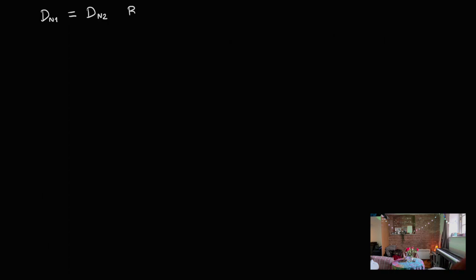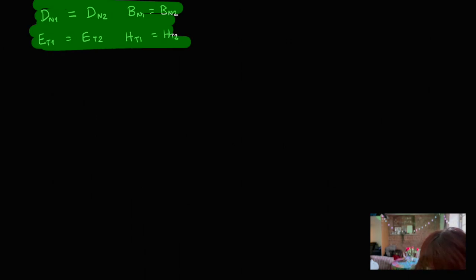In the last video, we derived the four results that different components of both the electric and displacement field, as well as the magnetic and magnetic intensity fields, transport across the boundary in slightly different ways. We got the result that the normal component of D is continuous across the boundary, and the normal component of B is continuous across the boundary. However, for the E and H fields, it was the tangential component that transported across in both cases.